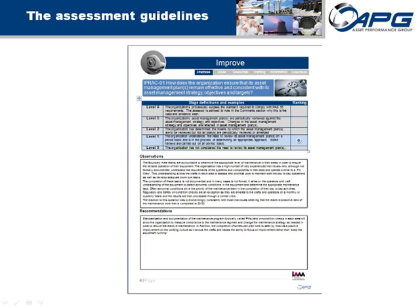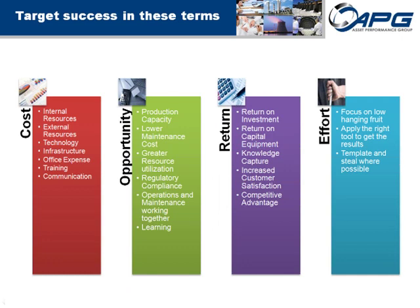The assessment can be valuable on its own to identify where the organization may need to improve. Additional value may be gained by understanding the financial impact of improving the asset management function. At APG, we quantify benefit in terms of cost, opportunity, return, and effort. Although there is value in becoming certified as compliant to the PAS 55 guideline, there is often more immediate value in pursuing initiatives that will create returns to the organization right now — low-hanging fruit such as increased equipment uptime, formalized consistent business processes, or reduced overall cost of maintenance. Today, there is no regulatory requirement that makes PAS 55 mandatory in any industry.